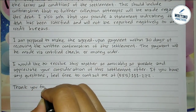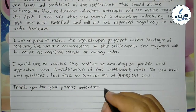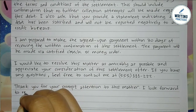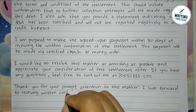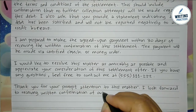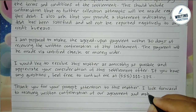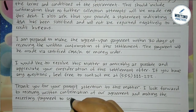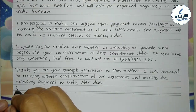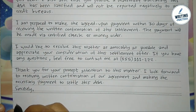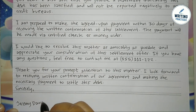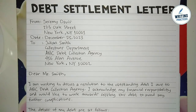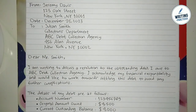For the last paragraph, this is where you give appreciation for the recipient's consideration. Simply write: 'Thank you for your prompt attention to this matter.' You should also request the recipient's prompt confirmation — the writer looks forward to receiving written confirmation of their agreement and making the necessary payment to settle the debt. Finally, close the letter with 'Sincerely,' add your signature, and write your full name under it. That's how you write a debt settlement letter step by step. I hope you find this video helpful — thank you for watching and see you soon.